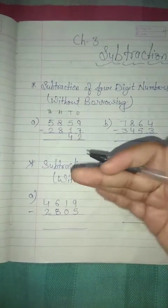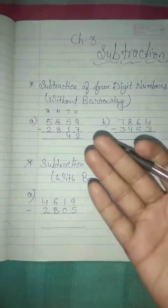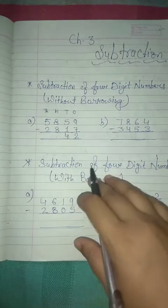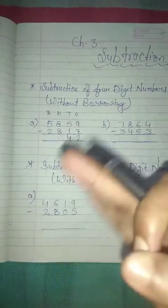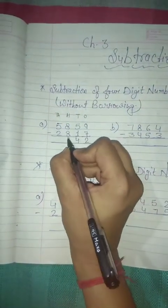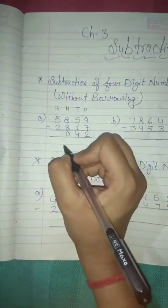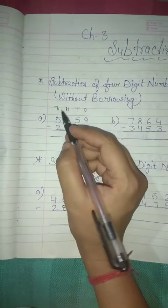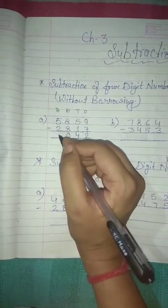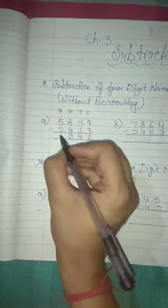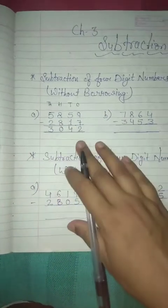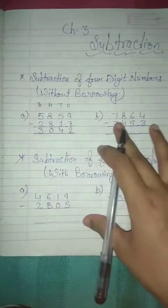So how much are you left in your hand? 0. So write down here: 0. And 5 minus 2 is equal to? Tell me. Yes, 3. So write down here 3.